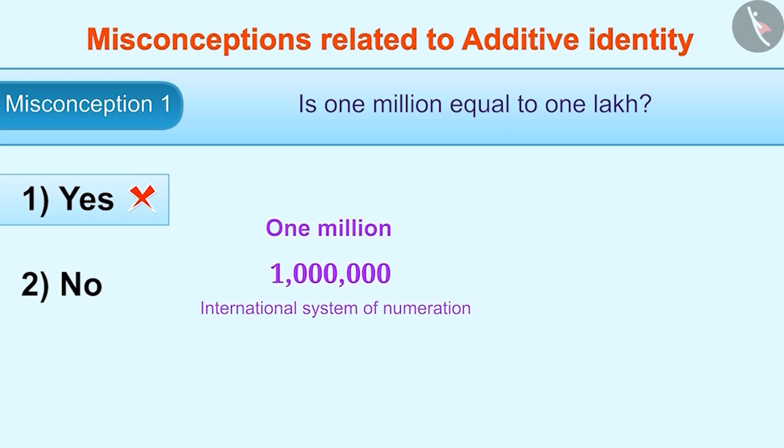The term million is used in international system of numeration. Let's write the number in Indian system of numeration. By doing so, we will get 10 lakh.